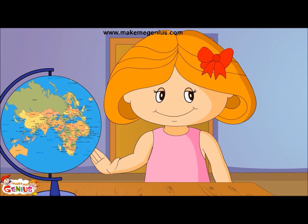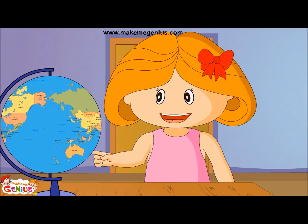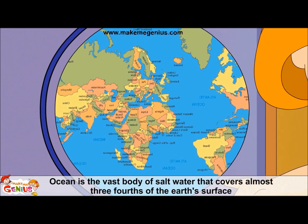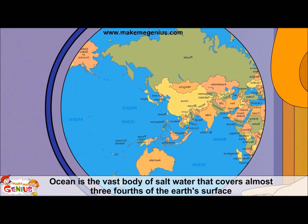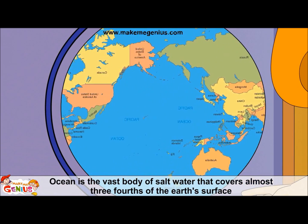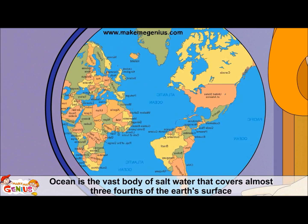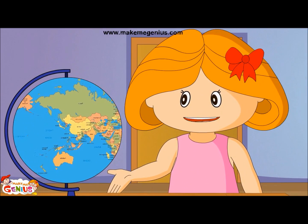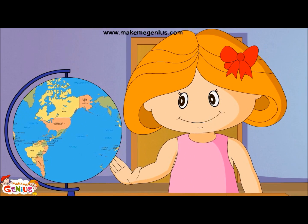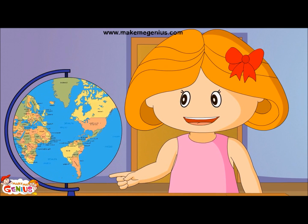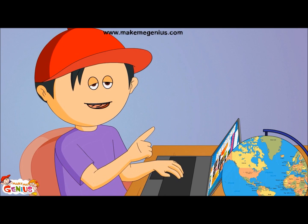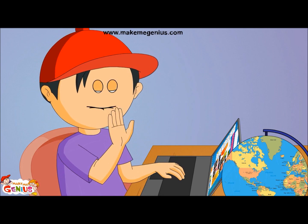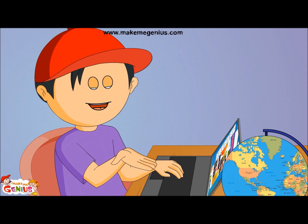Let's first understand the meaning of an ocean. An ocean means the vast body of salt water that covers almost three-fourths of the earth's surface. We have five oceans on the planet and they are all attached to each other. You told that blue on the globe also tells us about rivers.